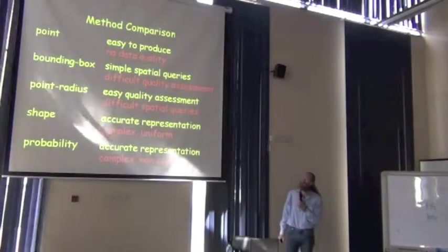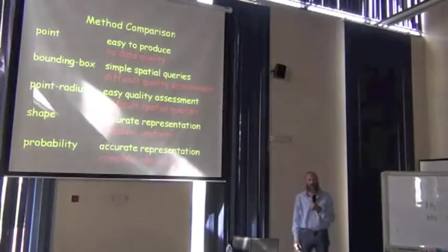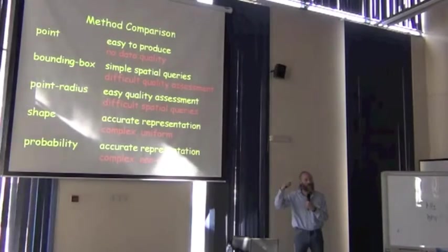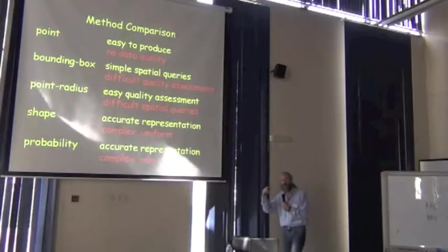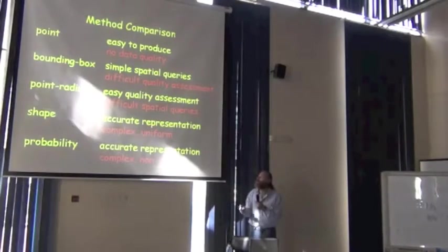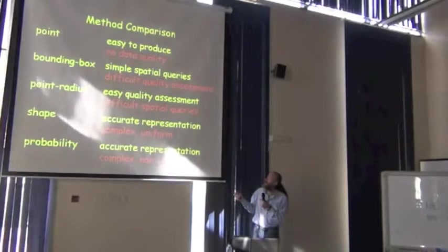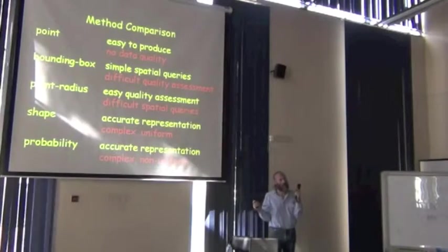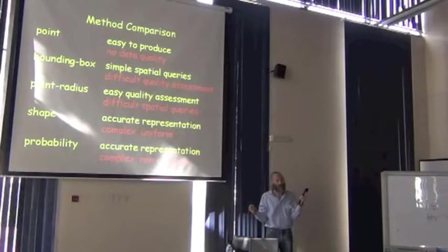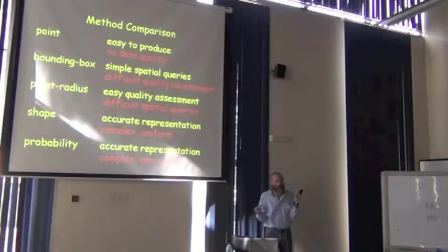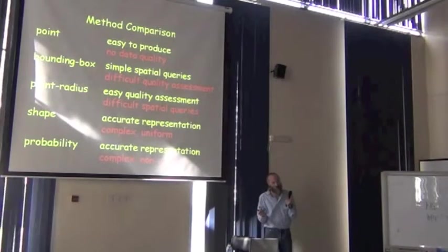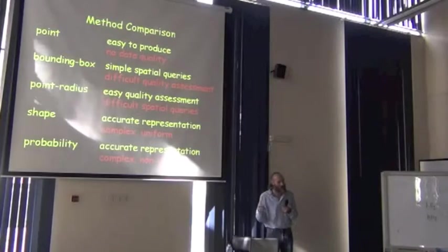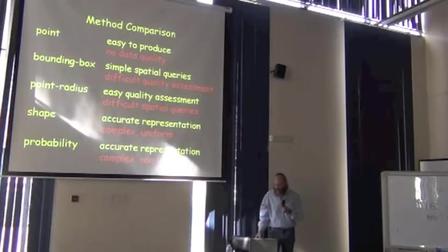The bounding box method is simple in terms of doing spatial queries. If you wanted to find out if something was inside a bounding box, you just need to look at the latitude and longitude limits and see if they're between. That's an easy query to do. You don't need a GIS. You can do it in Excel if you want. But it's a little more difficult to assess the data quality. You can look at the corners of that bounding box and get a sense of how far apart they are in degrees, but it doesn't tell you how far apart they are in kilometers. It's easy to know if you're inside the box, but it's not as easy to know how big that box is, at least intuitively.